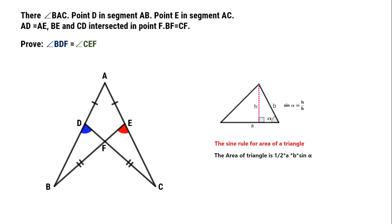One is sine rule for area of triangle. The other is, larger side and triangle, opposite to greater angle.